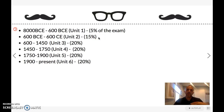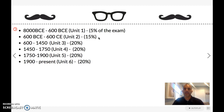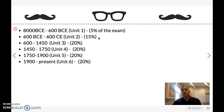Unit two is 600 BCE to 600 CE. BCE means Before Common Era and CE means Common Era — they've replaced BC and AD. That's 15 percent of the exam, covering the classical civilizations: Han, Gupta, Roman, and Greek.